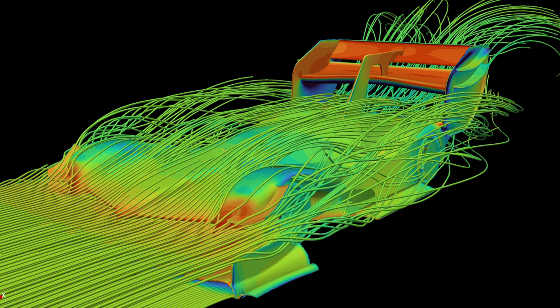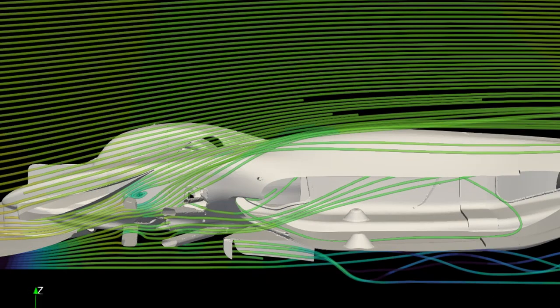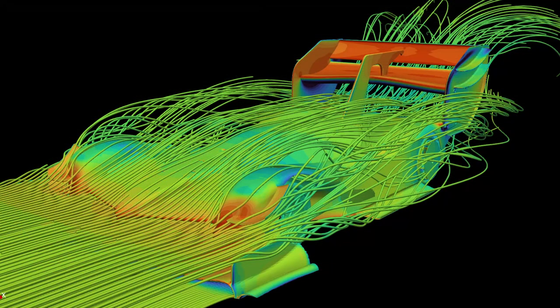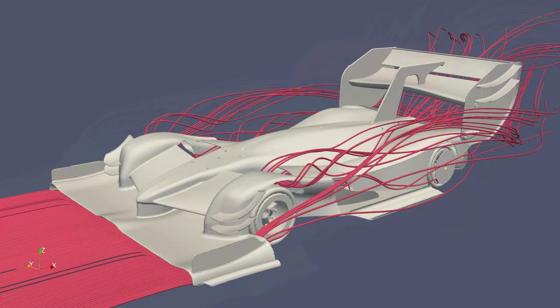In combination, we might also use something like a down washing airfoil on the nose or on the side pods to help redirect the airflow. To provide a better visualization of these airflow patterns, I created a render to demonstrate the layers of the air around the front nose.